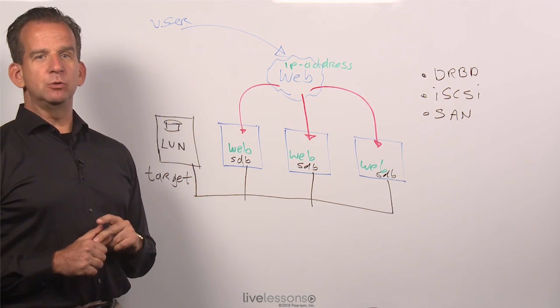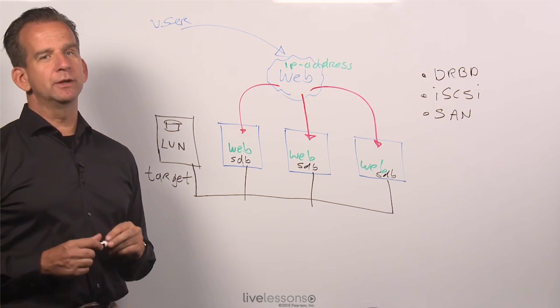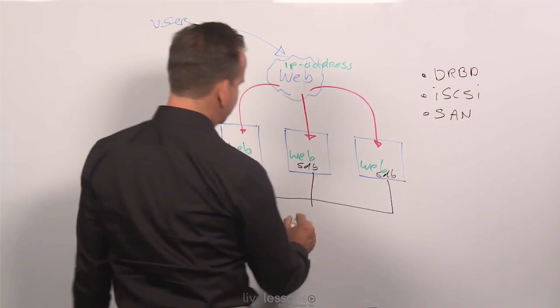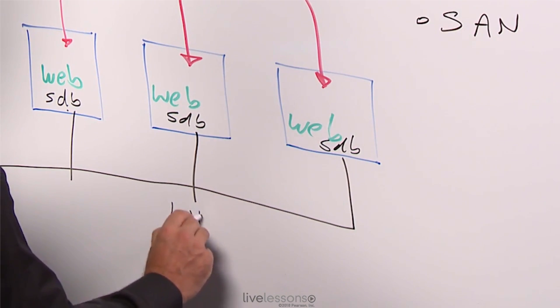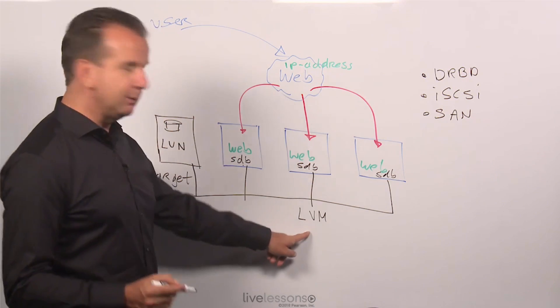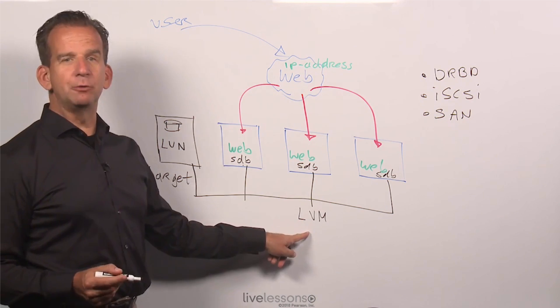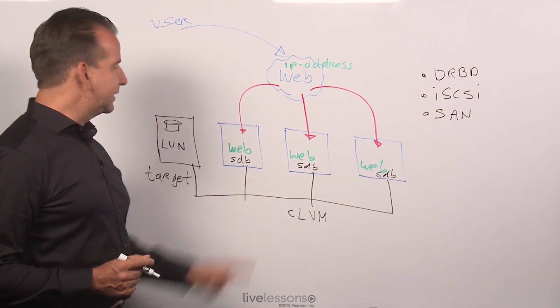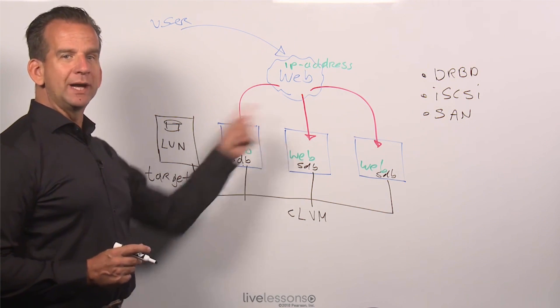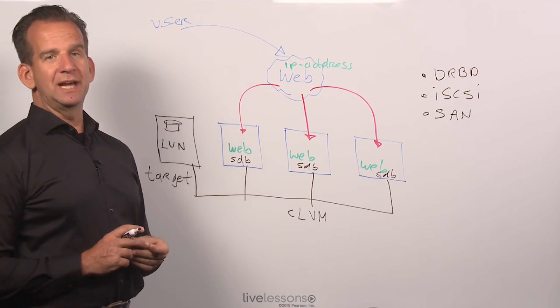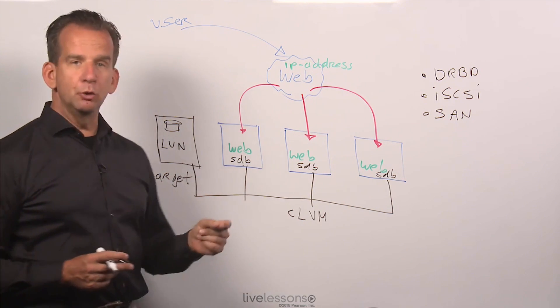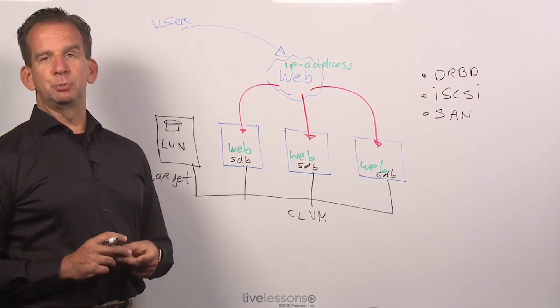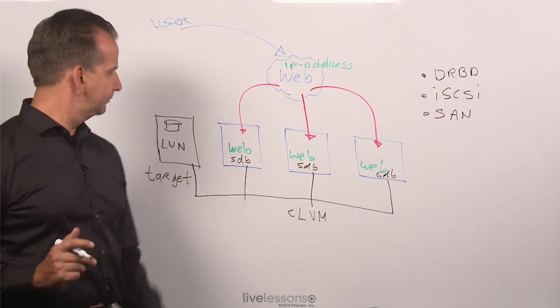Now on iSCSI as well, you need to choose between an active-active configuration or an active-passive configuration. And in order to do so it is very important what you are going to put on top of the iSCSI device. We will see that there is a specific version of LVM, which is CLVM, clustered LVM. And by using clustered LVM you can take care of logging in the iSCSI environment and make sure that either multiple nodes can write to the device simultaneously, or that the LVM volume is presented to one node only.